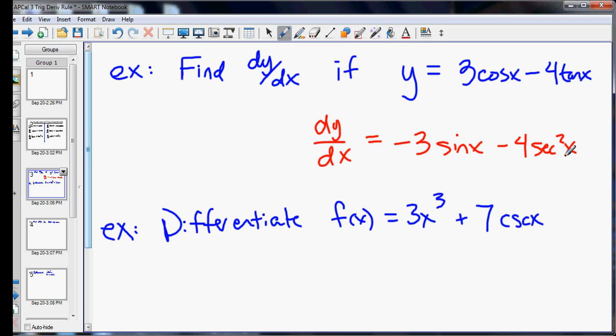Next up, differentiate f(x) equals 3x cubed plus 7 cosecant x. So here we're mixing polynomial pieces and trig. The derivative of 3x cubed, we use the power rule, multiply by the exponent, subtract 1 from the exponent.